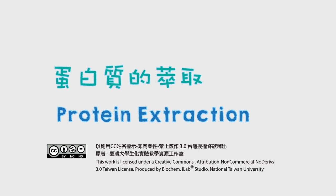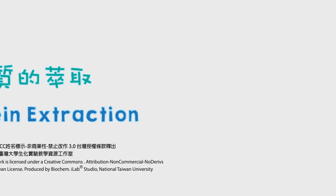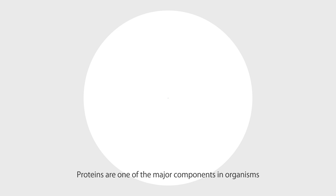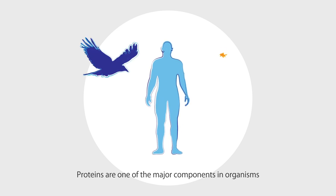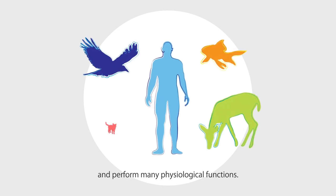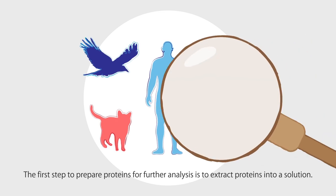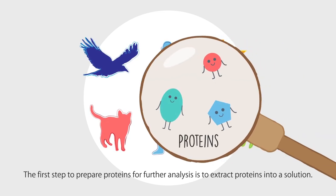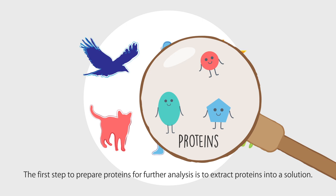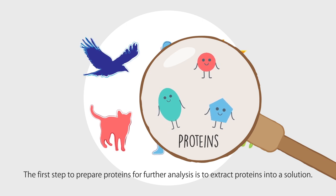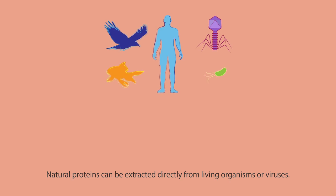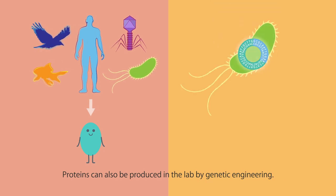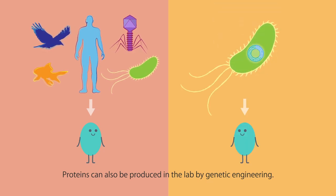Protein extraction. Proteins are one of the major components in organisms and perform many physiological functions. The first step to prepare proteins for further analysis is to extract proteins into a solution. Natural proteins can be extracted directly from living organisms or viruses. Proteins can also be produced in the lab by genetic engineering.